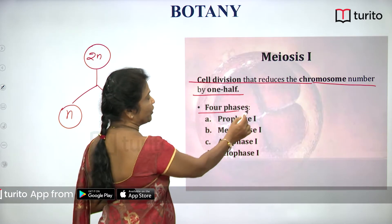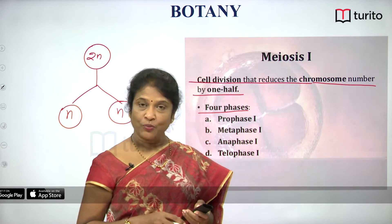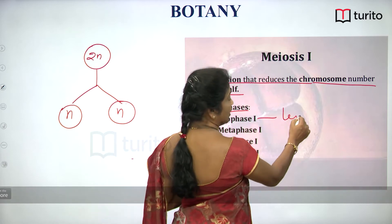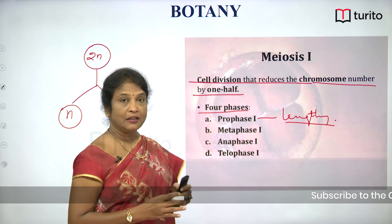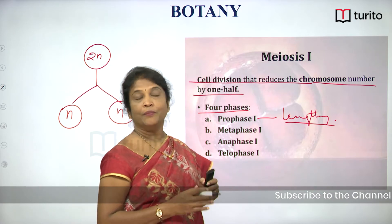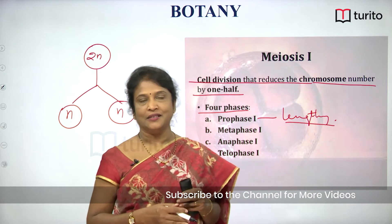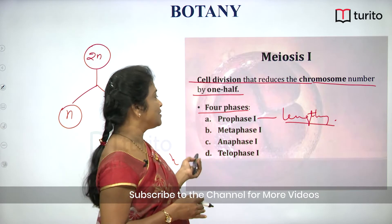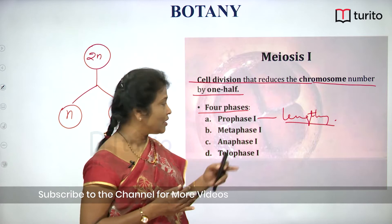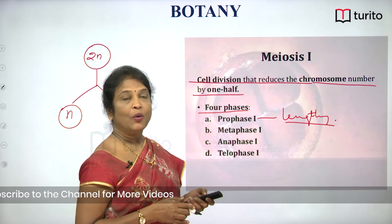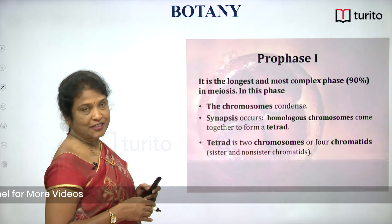Meiosis one has four phases: prophase one, metaphase one, anaphase one, and telophase one. Prophase one is a very lengthy phase — it takes the major time allotted for the meiotic division and involves many complex events. For convenience, to follow all the sequential complex events that occur during prophase one, we have categorized it into different sub-phases.